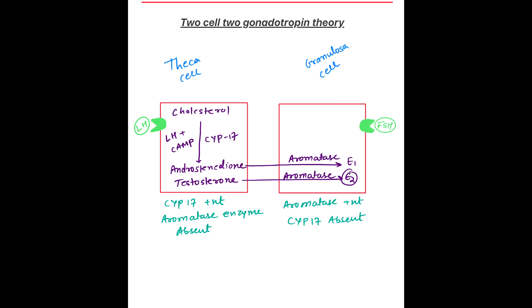The 2-cell, 2-gonadotropin theory involves theca cells and granulosa cells — two types of cells — and luteinizing hormone (LH) and follicle-stimulating hormone (FSH) — two types of gonadotropins.